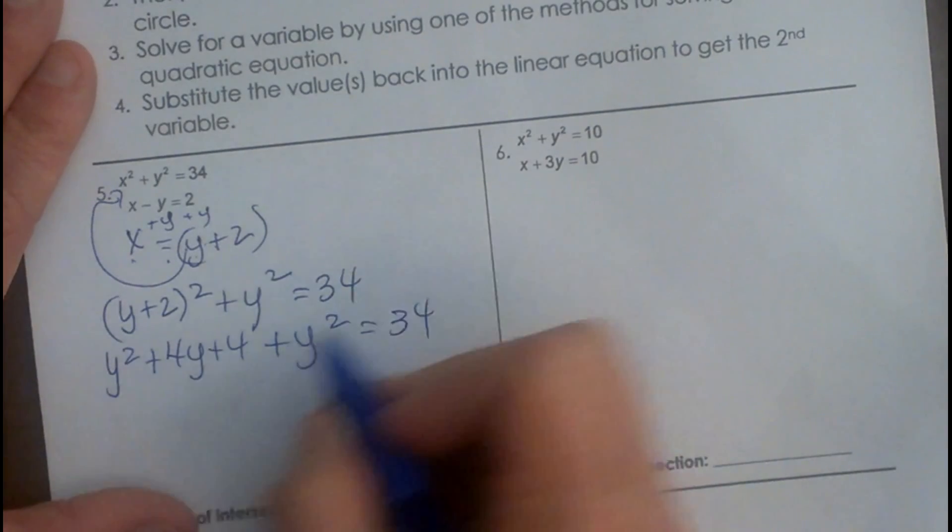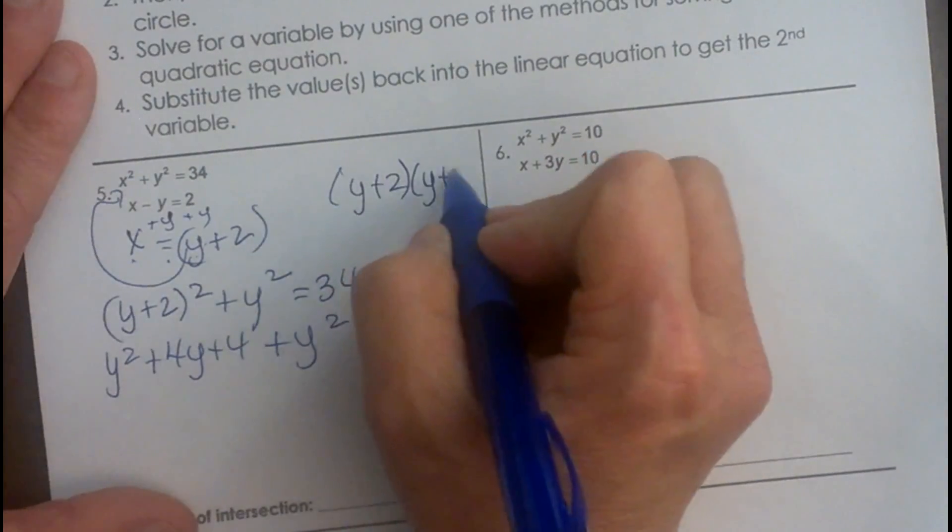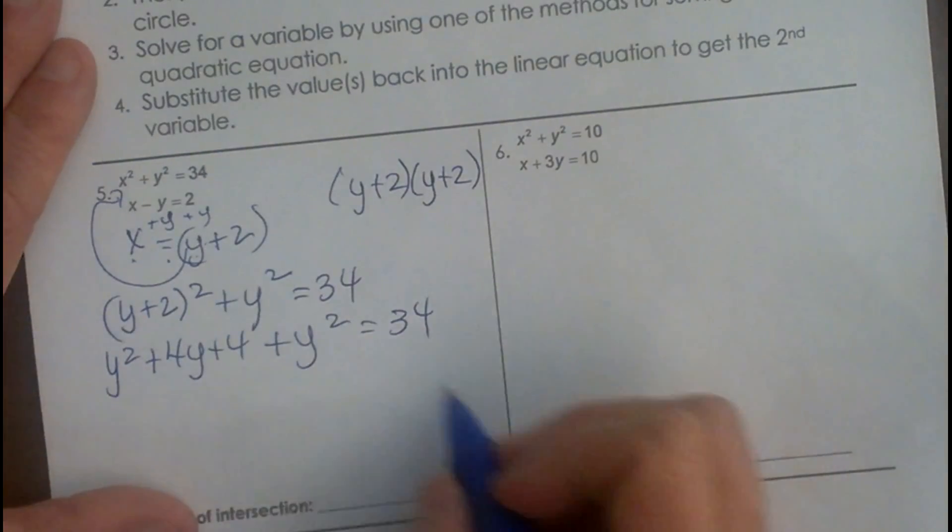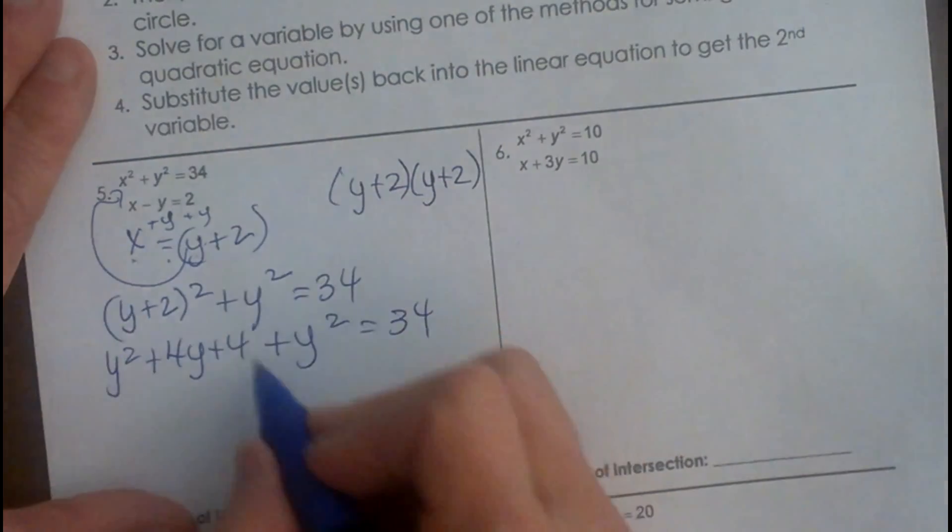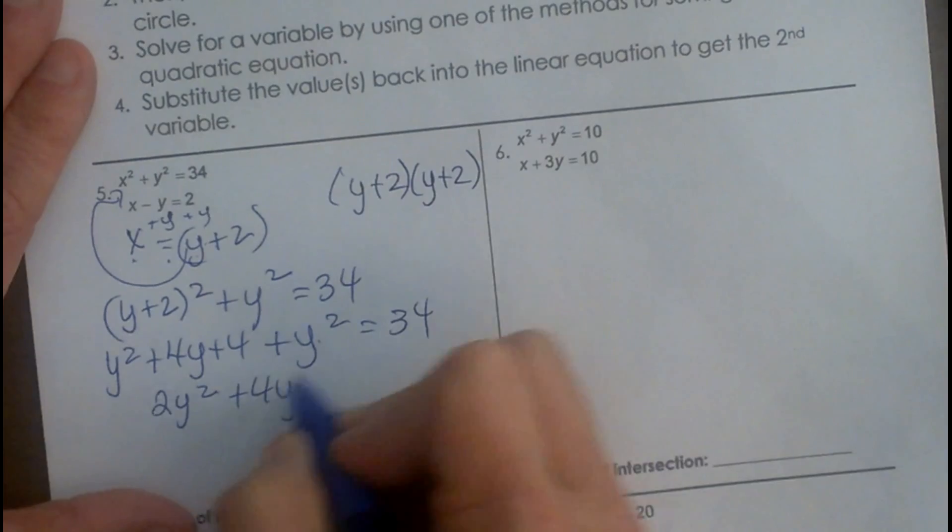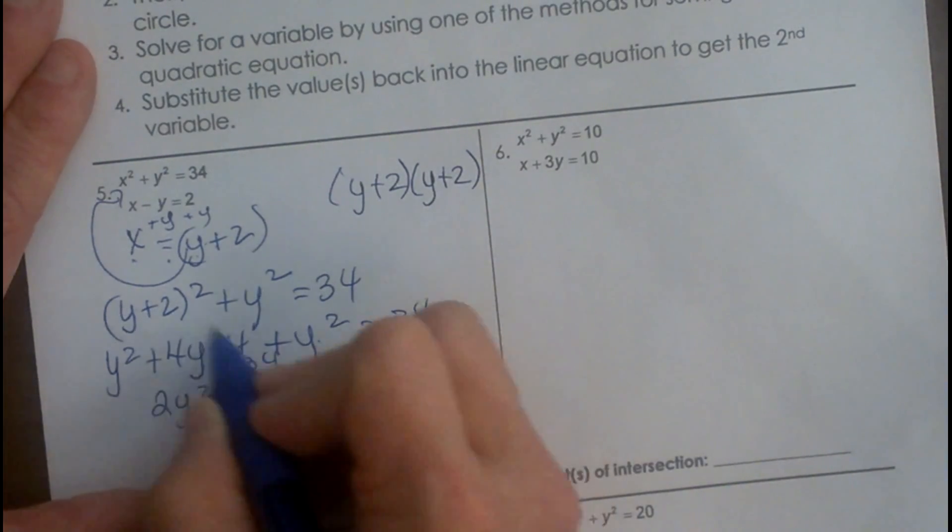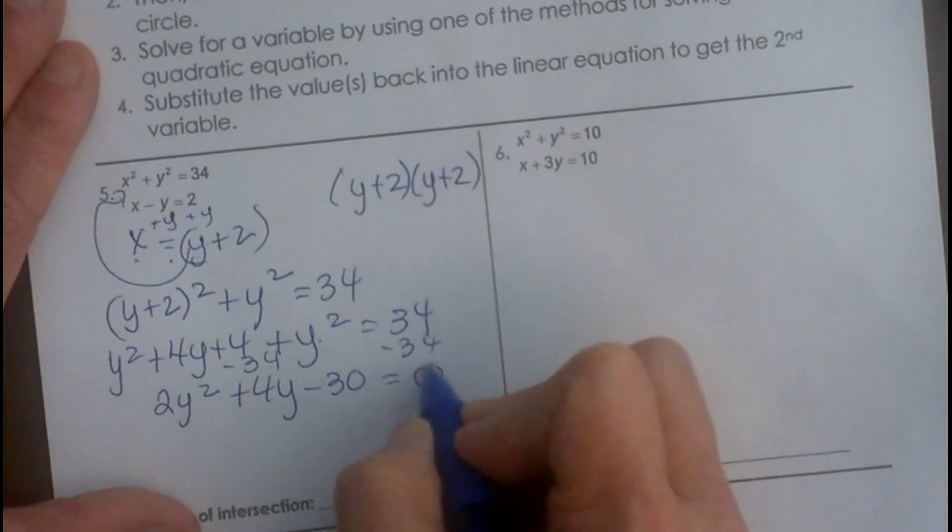I hope you guys know where I just got that. If not, just go back and foil out y plus 2 times y plus 2. Now let's combine our like terms. We're going to combine these together. So we have 2y squared plus 4y, and then we're going to bring this 34 over. So subtract 34 and combine it with the 4, that's minus 30 equals 0.